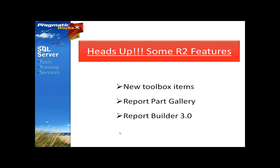I wanted to give everybody a quick heads-up about some of the new R2 features. We have new toolbox items like gauges, sparklines, maps, and indicators. The Report Part Gallery allows you to publish specific report items — such as data regions, charts, or any other objects — instead of the whole report, and those can be reused by others in their own reports. Report Builder 3.0 is a big step up from 2.0, allowing end users to use those individually deployed report parts. We'll talk about Report Builder on day four.